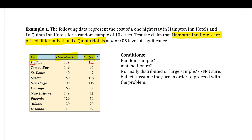Let's go down the conditions list. Are these random samples? Yes — a random sample of 10 cities. Are these matched pairs? Yes, they are matched pairs because they're in the same market. Are they normally distributed? It doesn't really tell us that they are, but let's just assume that they are in order to proceed with the problem. We're going to be focusing on the differences.